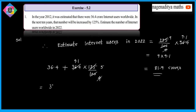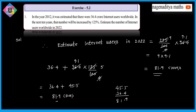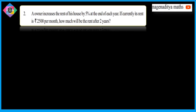The second method: 36.4 plus 125% of 36.4. 125% of 36.4 = 45.5. So 36.4 + 45.5 = 81.9 crores. You can directly calculate using the percentage increase method as well.